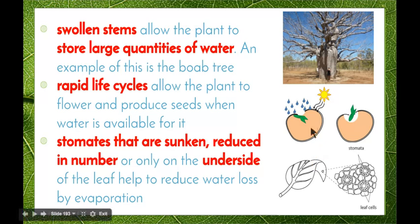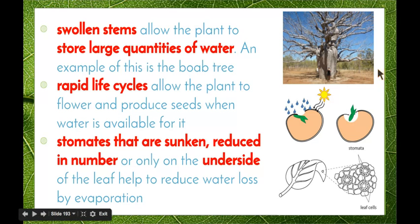Swollen stems, like on this boab tree here — with a person shown for scale — allow the plant to store large quantities of water. This plant is in a fairly arid environment where there isn't a great deal of water available. When water is available, the stem fills up and retains it to keep the plant alive.